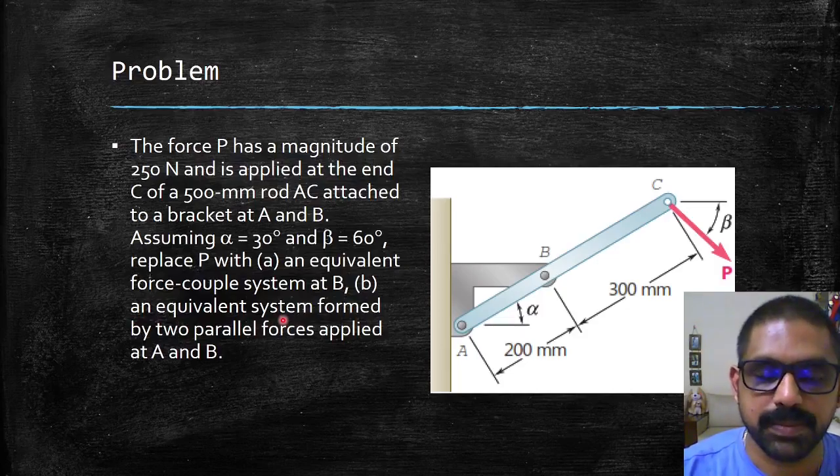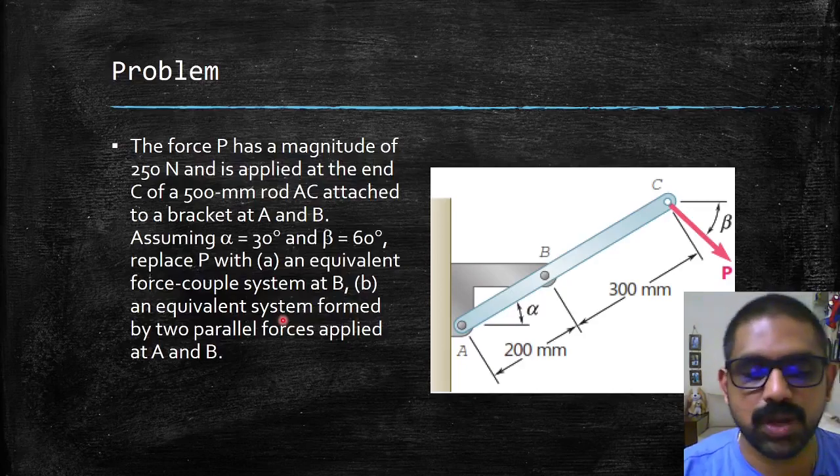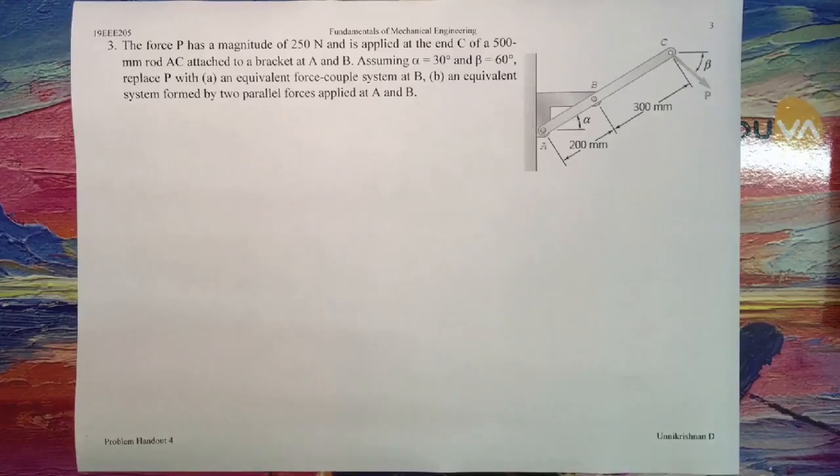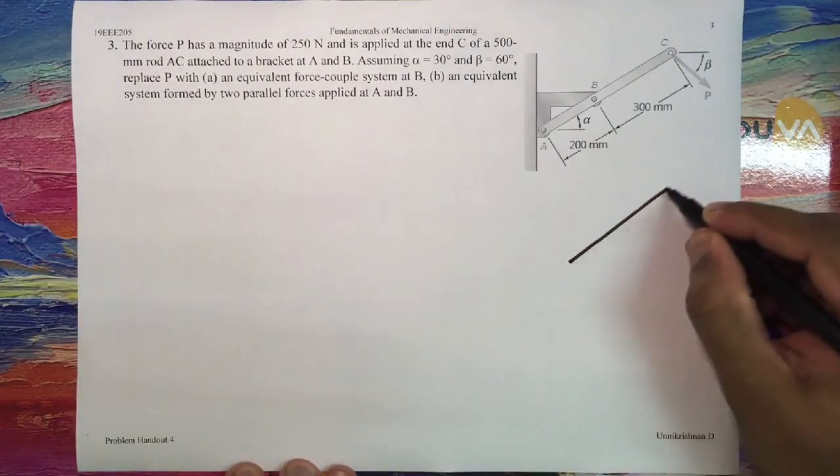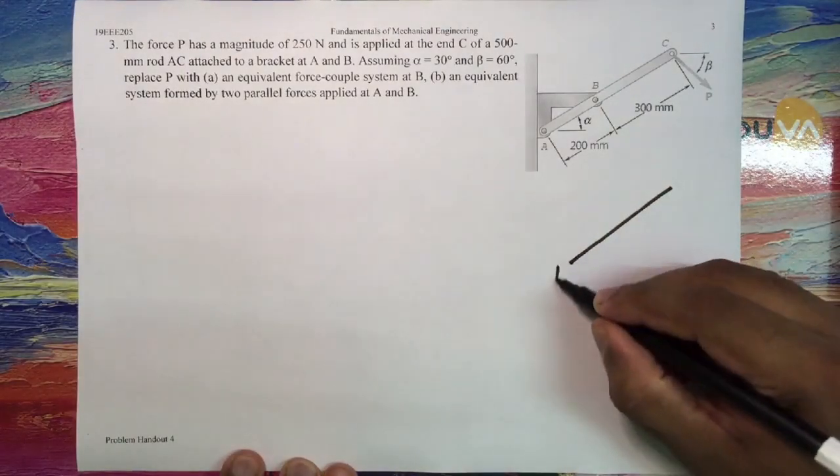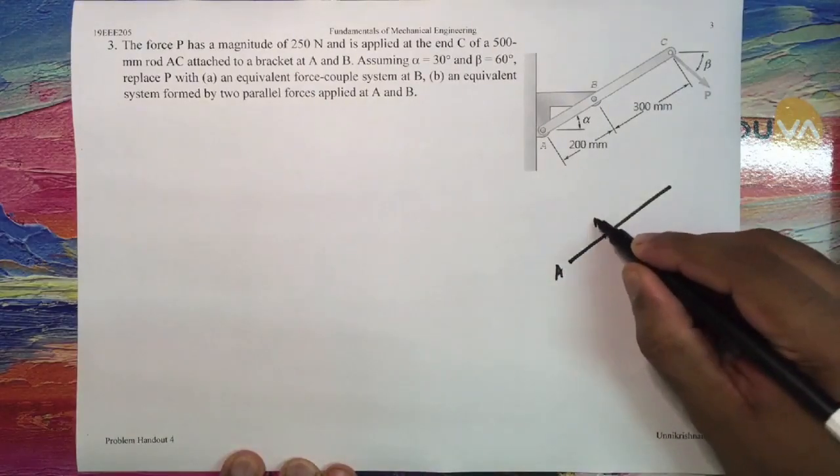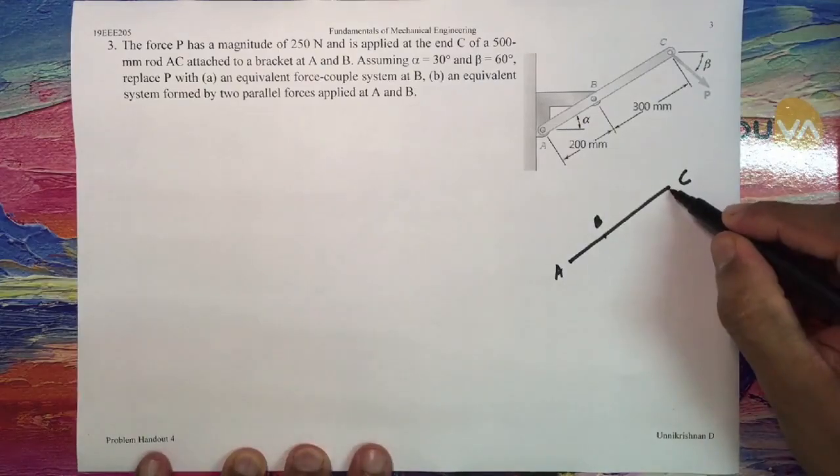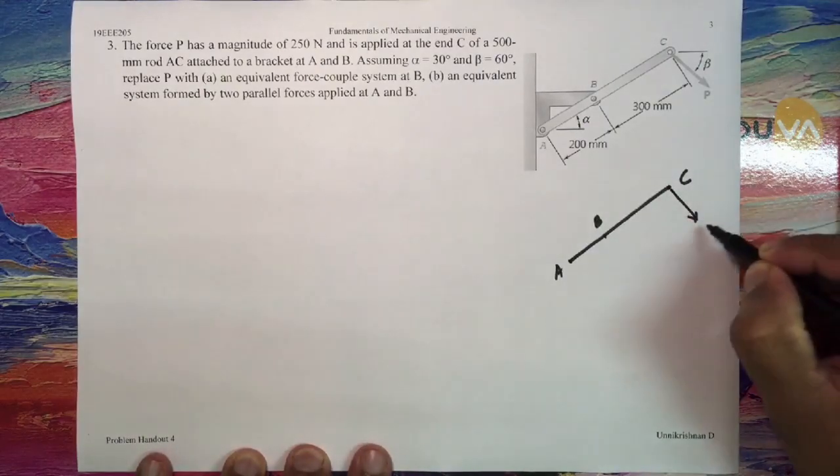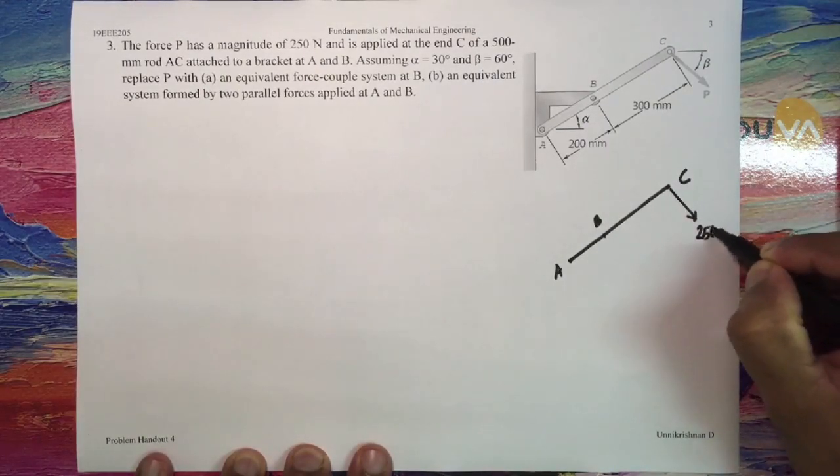So let us try solving this problem. If you look at this lever ABC, I have point A here, B and C. The force P, that is 250 Newtons, is given in the question.